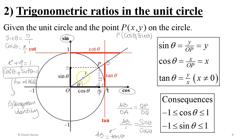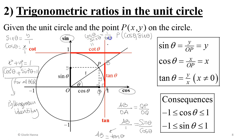Similarly, if you extend line OP to intersect the axis of cotan, that distance equals cotan θ. By the same similar-triangle argument, the relevant side equals cos θ / sin θ, which is cotan θ — also equal to 1/tan θ. So this is the axis of tan and this is the axis of cotan. Wherever P is on the circle, extend line OP to intersect the corresponding axes to read off the trigonometric ratios.